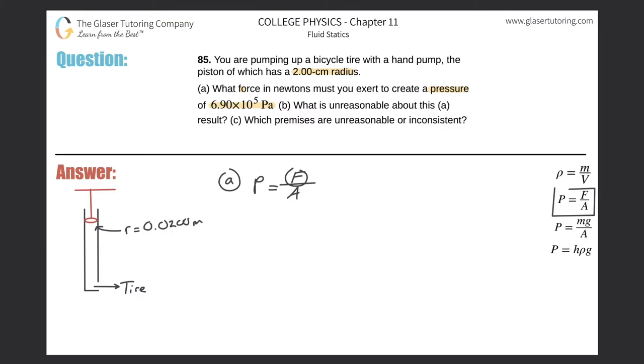They're asking us for the force, so just solve this for force. Do the cross multiplication, it's just pressure multiplied by area. And now, expand on the area, it's just going to be pressure multiplied by pi r squared.